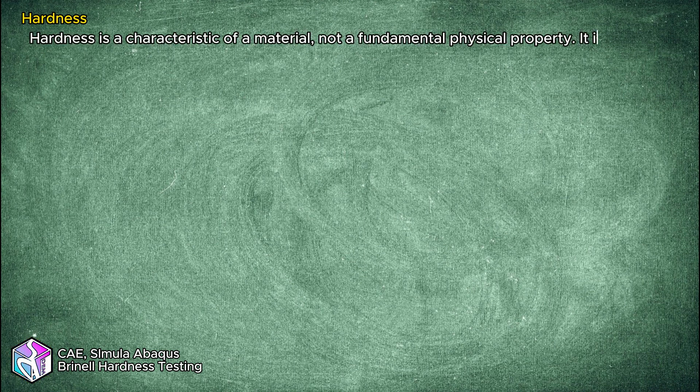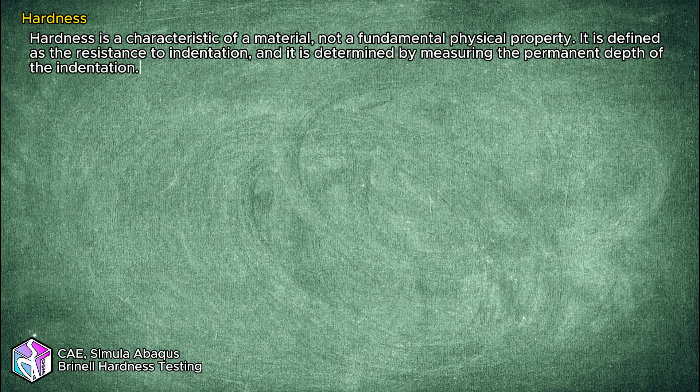The outcome of this test is BHN, or Brinell Hardness Number, which refers to the amount of hardness of a material. Hardness is a characteristic of a material — it is not a fundamental physical property. It is defined as the resistance to indentation, determined by measuring the permanent depth of the indentation. With a fixed force and given indenter, the smaller the indentation, the harder the material.